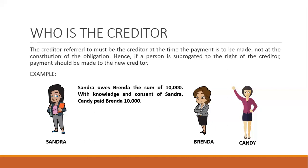As used in Article 1240, any person authorized to receive payment means not only a person authorized by the creditor but also a person authorized by law to receive the payment, such as a guardian, executor, or administrator of the estate of a deceased, an assignee or liquidator of a partnership or corporation, as well as any other person authorized to do so by law.